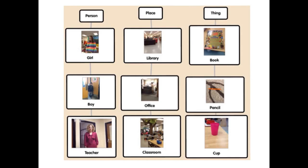In this picture I used Popplet and I called it Nouns. And in it I wrote down person, place, and thing. And for person I put girl, boy, and teacher. And for place I put library, office, and classroom. And for thing I put book, pencil, and cup.